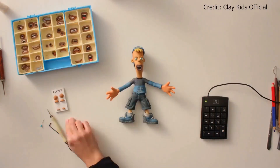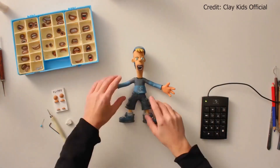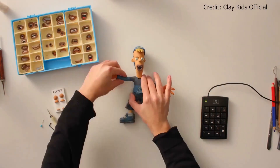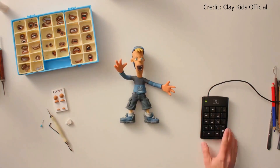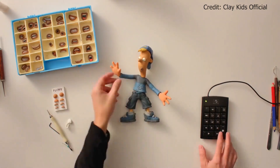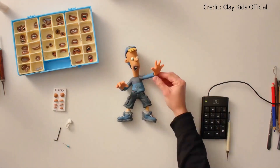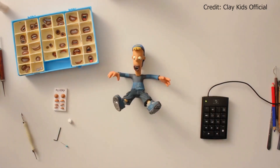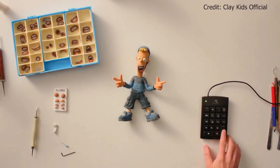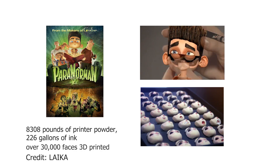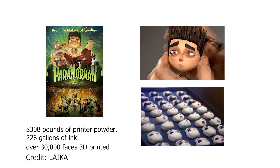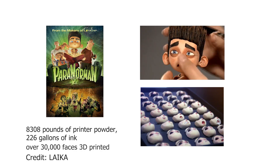Stop motion is a traditional animation technique that moves a physical object in small increments between photograph frames to produce the illusion of fluid motion. 3D printed replacement animation is an increasingly popular technique to animate deformable objects like faces, but can be prohibitively expensive for amateur filmmakers.